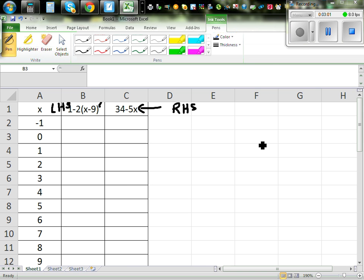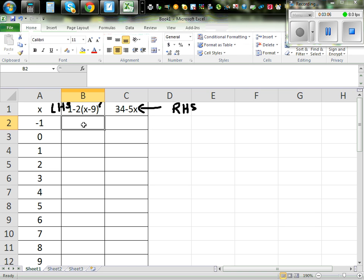So how do you use Excel? Excel understands formula. So click on this cell and go equal. This is 1 minus 2 times, there's a star key for times, bracket. X is this cell which is A2 minus 9, close the bracket and that will give you 21.